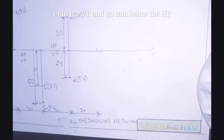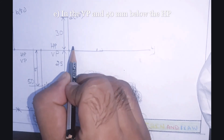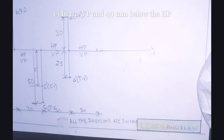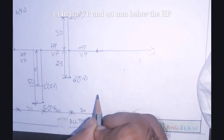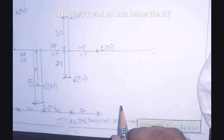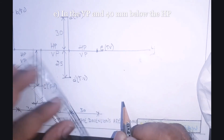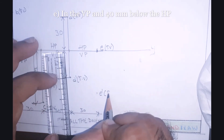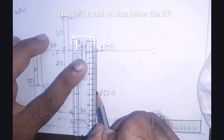The last point, Point E, lies in the third quadrant as well, because it is in VP and 40 mm below HP. Since the point is in the third quadrant, HP is above the XY line and VP is below the XY line. Let's draw Point E — this is the top view. And 40 mm below HP — let's draw that point as E' (front view). Now let's draw the dimensions.